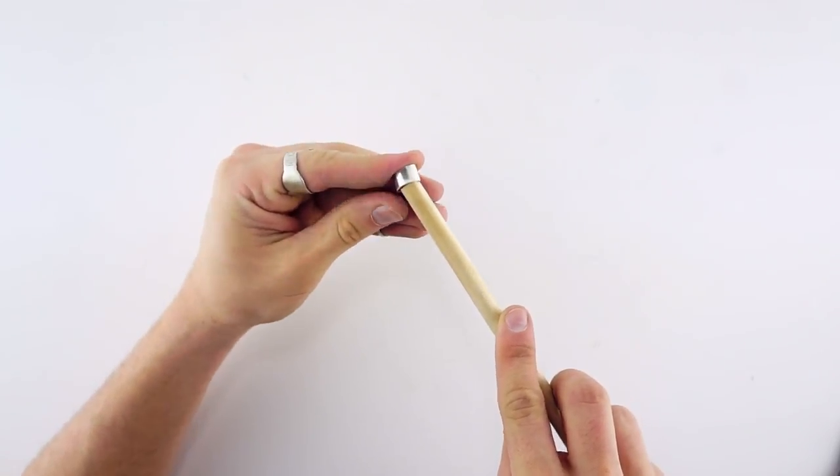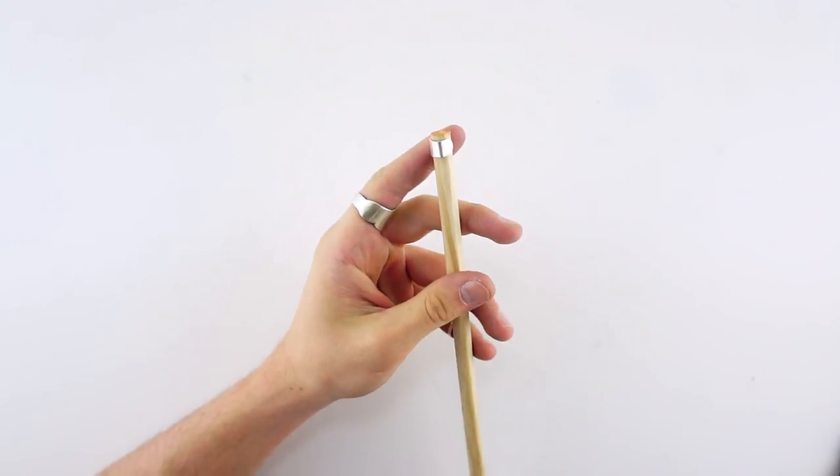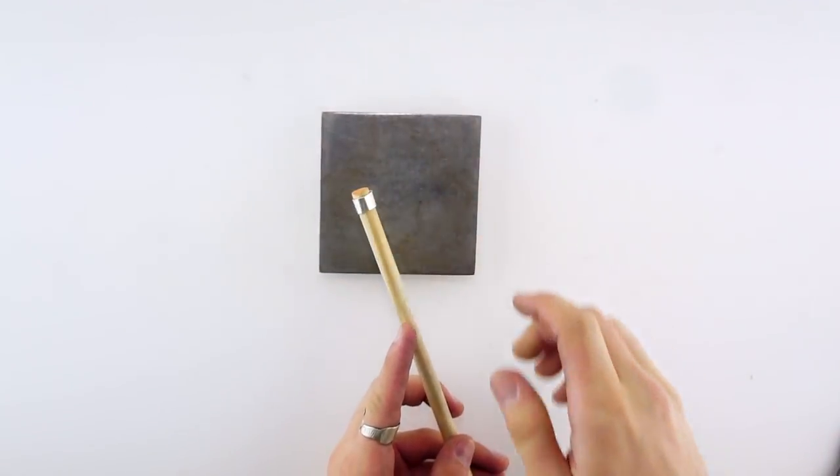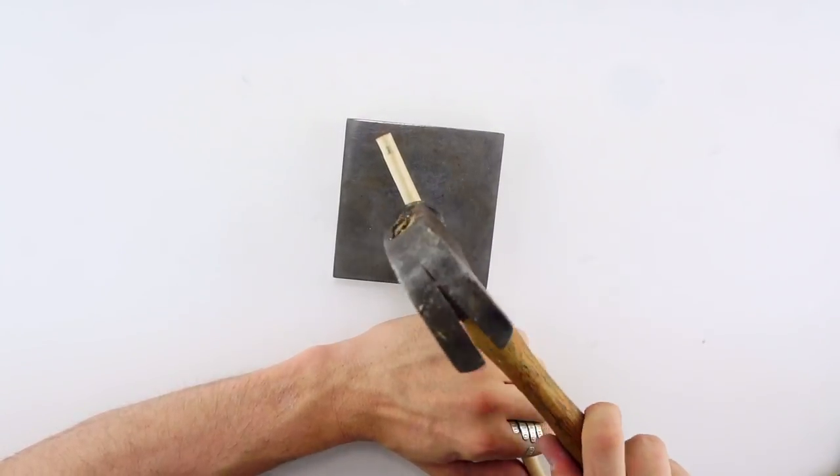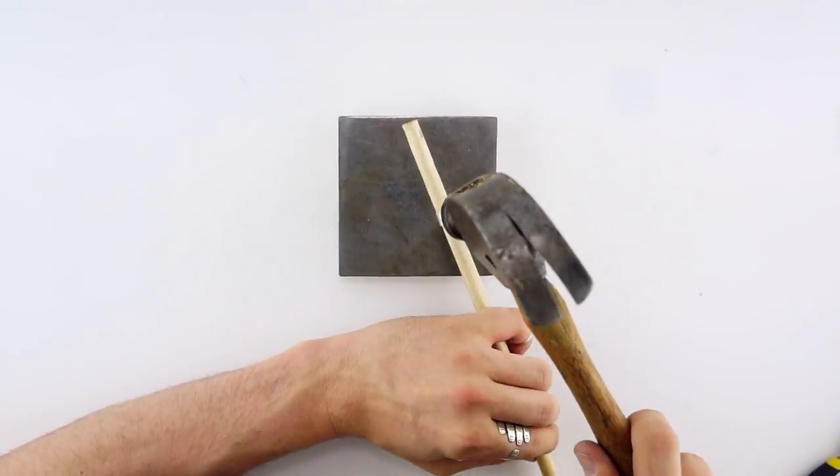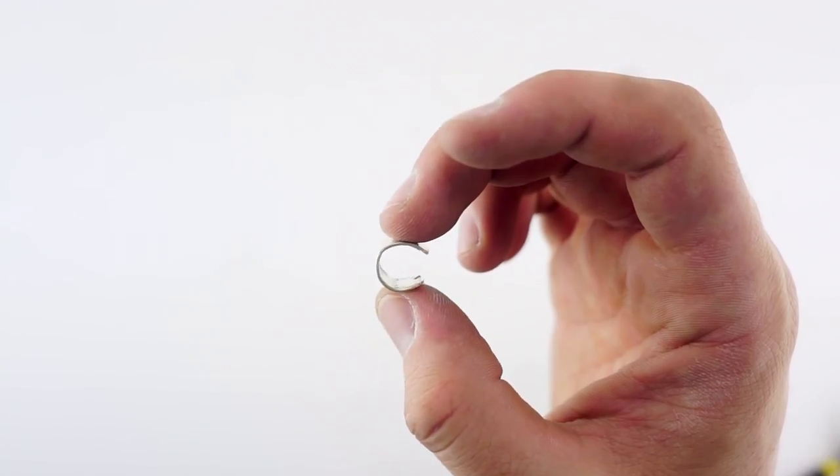And once you have it pretty round, you can take something that is round, like this little dowel, then you can put it on top of a hard surface. I had that little steel plate. And then just start hitting it with a hammer until it's nice and round. And there you have it, that's a little ear cuff.